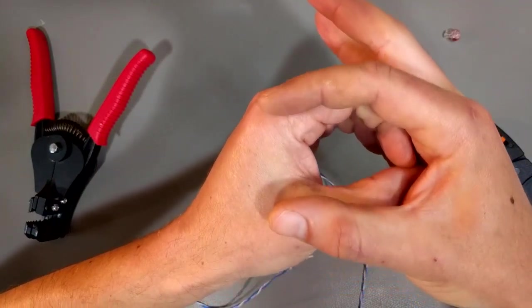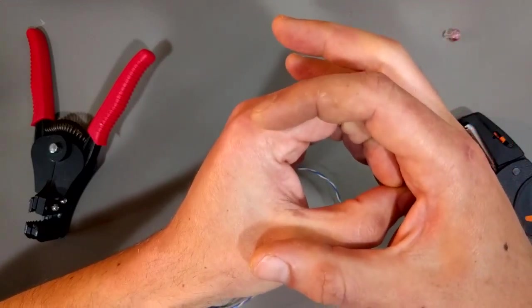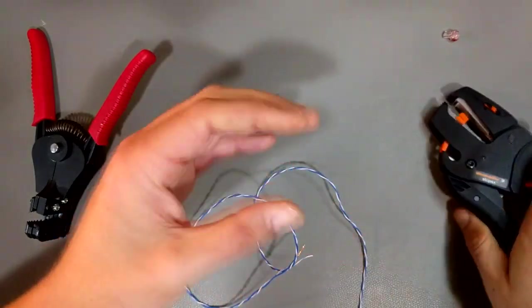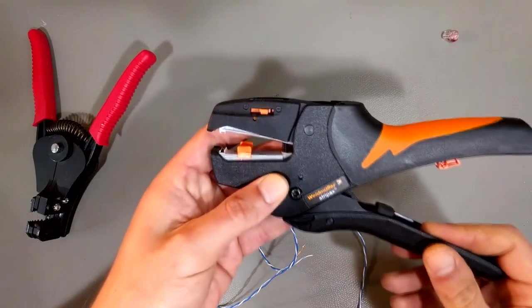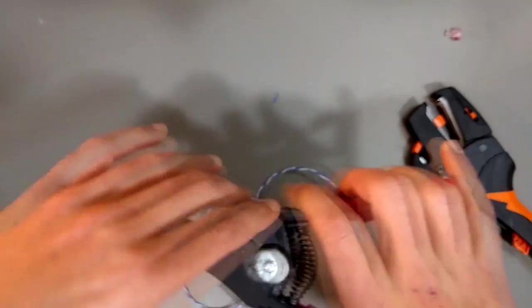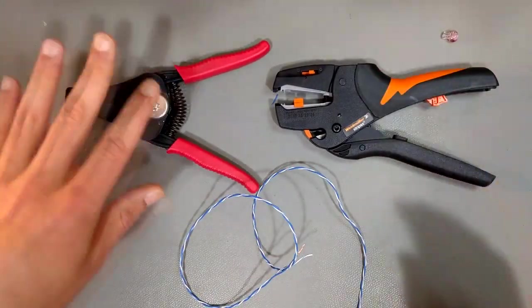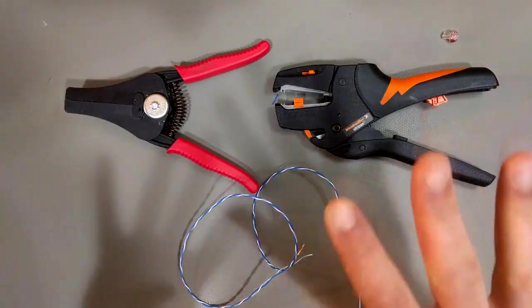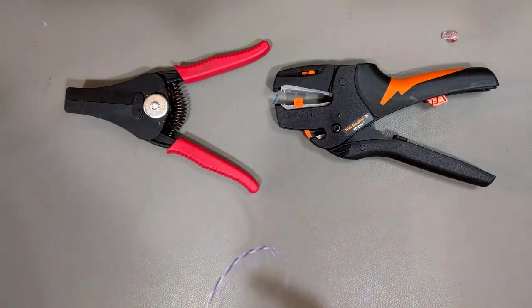So those blades are going to come down and they're going to cut the insulation on the top and bottom of the wire, but the insulation on the sides is still going to be connected. And then when you squeeze, the gray part slides back and it pulls the insulation off. So for thicker wires I find that these are actually not quite as good because they're not actually totally cutting the insulation like this guy does. So that's why I have two. I have these guys for stripping larger diameter wires, and these guys are an absolute dream for stripping insulation off thinner wires.